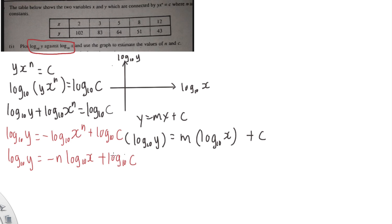then you can straight away compare whatever I have here with here. So we know this one is y and this one is x. So obviously negative n will be my m and then the whole thing over here is c.